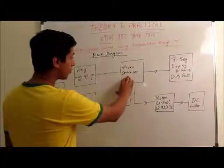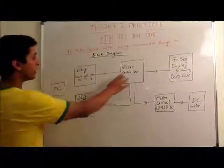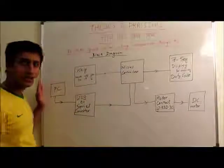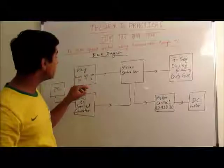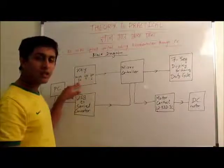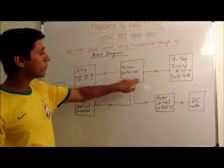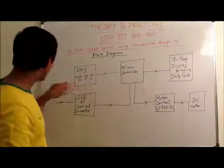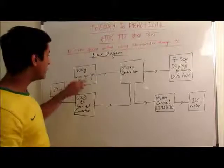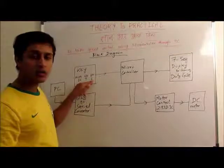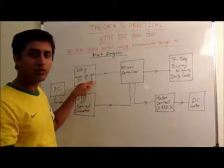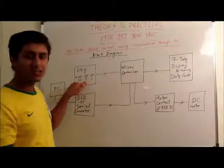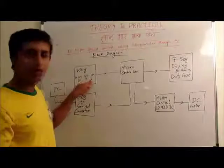In the heart of the project we have the microcontroller. The microcontroller can take two kinds of inputs: one is from the key and one is from the PC. The key has three major keys — mode, up, and down. The mode key defines what kind of input the microcontroller is going to take, that is either the key input or the PC input. The up and down keys control the actual duty cycle or the RPM of the DC motor — up is to increase the speed and down is to decrease the speed.